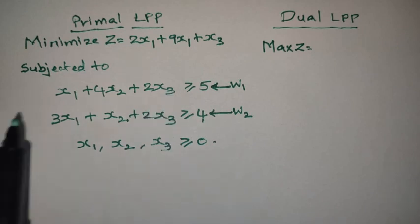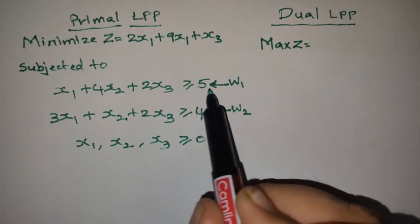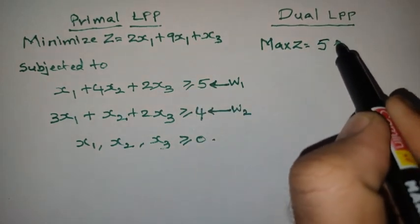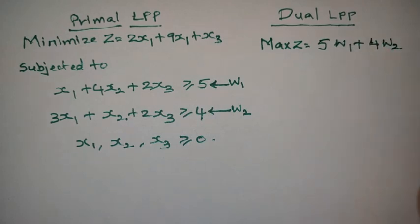So now, here they are already greater than or equal to, no need to convert them. So in the dual LPP, maximize Z equals 5W1 plus 4W2.